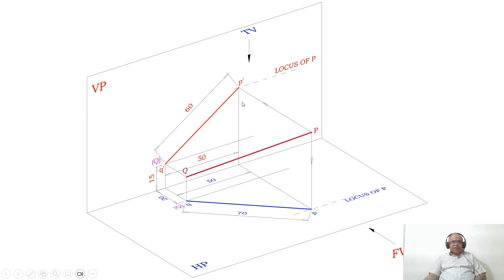When you look from the top view, you can see the distance in front of VP, which is 20 mm. From this point to here is that distance. When you look from the top view, that image falls on the horizontal plane. You mark this point as small q, and here it is capital Q.